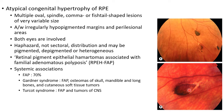Atypical CHRPE are also known as retinal pigment epithelial hamartomas associated with familial adenomatous polyposis, abbreviated as RPEH-FAP. This is because 70% of cases of familial adenomatous polyposis are associated with atypical CHRPE.